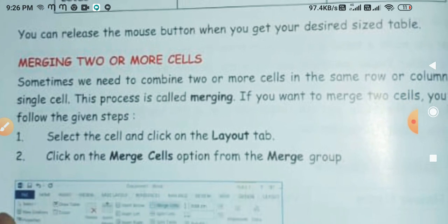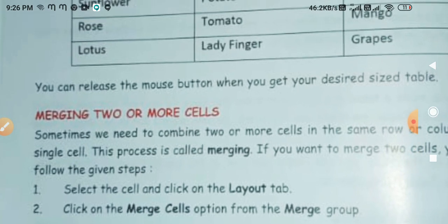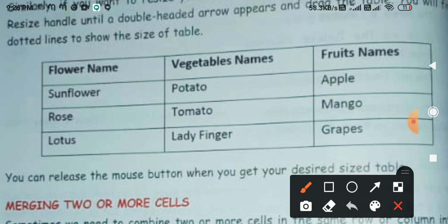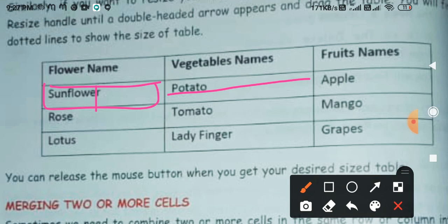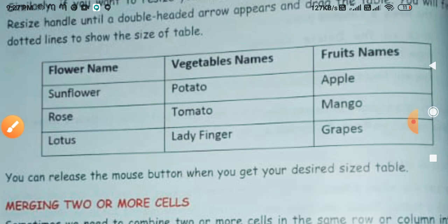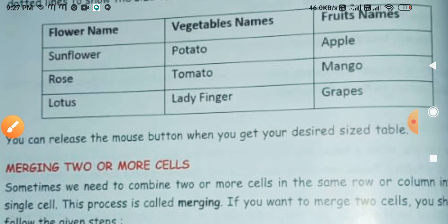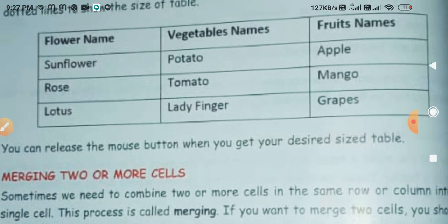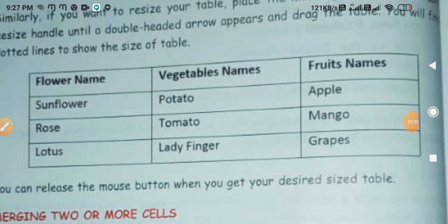Next option: Merging Two or More Cells. Suppose this is a table — we want to take one cell and convert it into two columns, or convert this row into two rows. Or suppose we want to convert two columns into one column or two rows into one — we will merge them. In the next video I will teach you about merging two or more cells. That's enough for today's class. Have a nice day and take care of yourself!